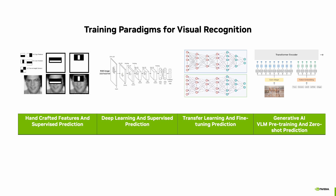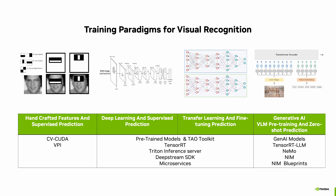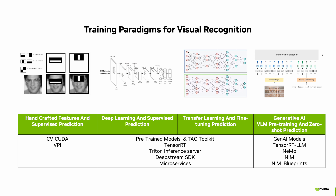Model customization involves training. Training paradigms for visual recognition go back many years, starting with handcrafted features and supervised predictions, followed by deep learning, then transfer learning, and then generative AI. NVIDIA has been providing libraries for GPU-accelerated pre- and post-processing for computer vision for many years. CVCuda is an open-source library that enables building high-performance, GPU-accelerated pre- and post-processing for vision AI in the cloud. VPI is another image processing library from NVIDIA. Metropolis software such as TAO, DeepStream, and cloud-native microservices are all used for deep learning and transfer learning of models.